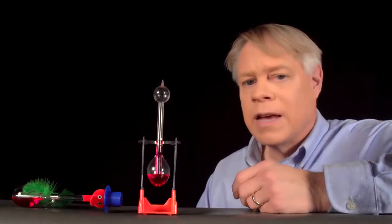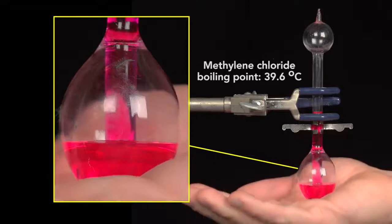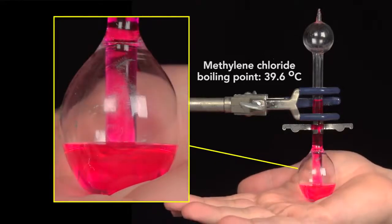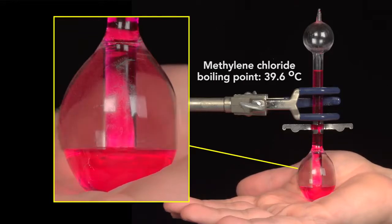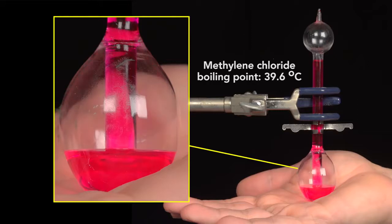Watch what happens as I heat the base of the bird with my hand. You see that liquid level in the base dropping — that's because energy from my hand is converting some of the liquid into vapor, which increases the pressure in this region. And that causes the liquid to rise to the head.